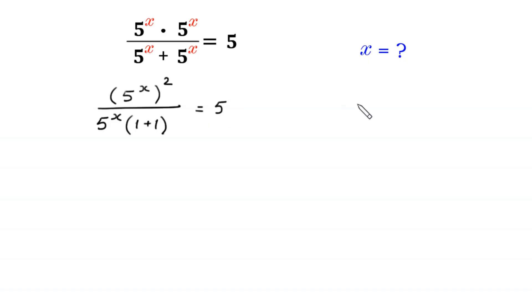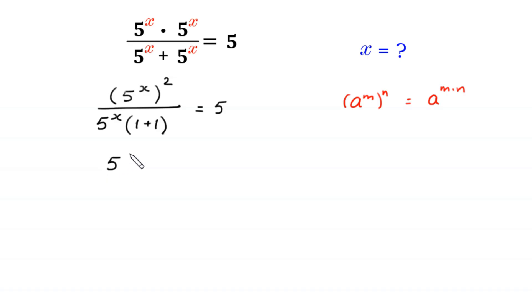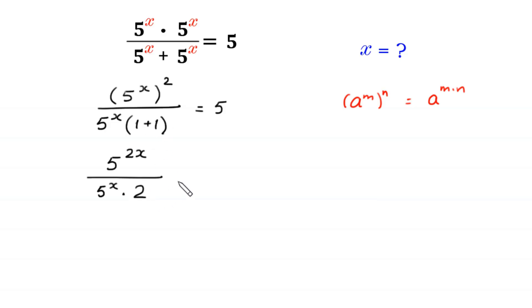According to the property of exponents, a to the power m, whole to the power n, is equal to a to the power m times n. So 5 to the power x, whole to the power 2, becomes 5 to the power 2x, divided by 5 to the power x times (1 plus 1), which is 2, equal to 5.